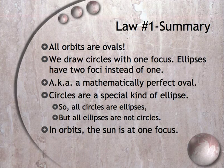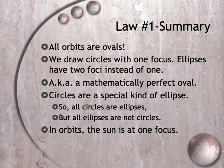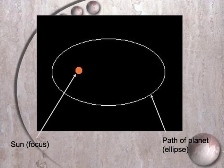We draw circles by putting a fixed point in the center and then using a string to draw around it. But ellipses actually have two of those — they have two foci instead of one. So it's a mathematically perfect oval. In orbit, the sun is going to be at one focus, and the comet, planet, or satellite is the other piece. It might look like this for a planet with the sun at one focus.